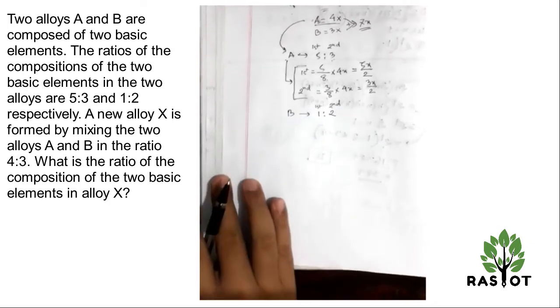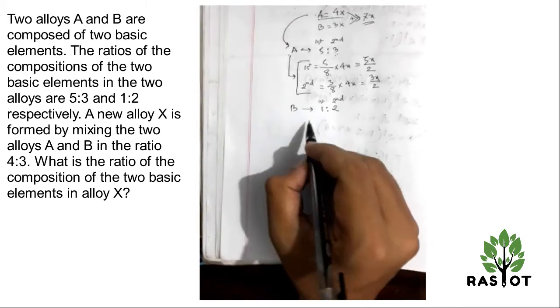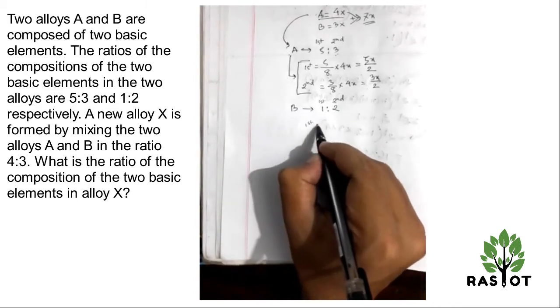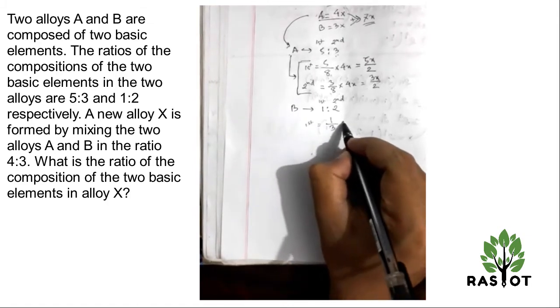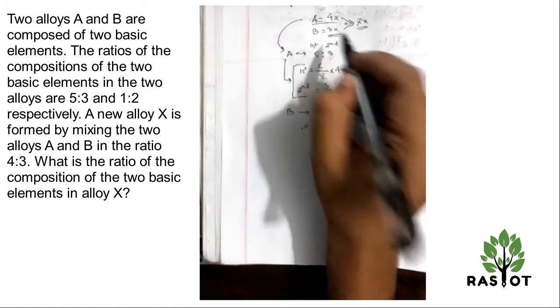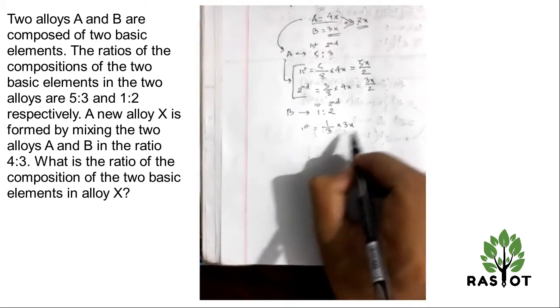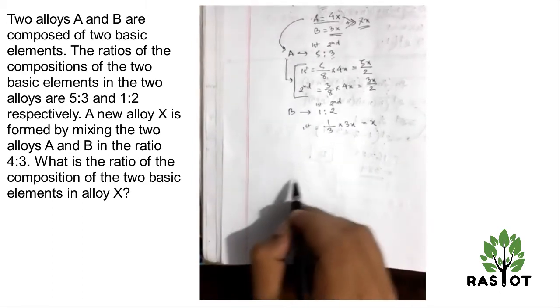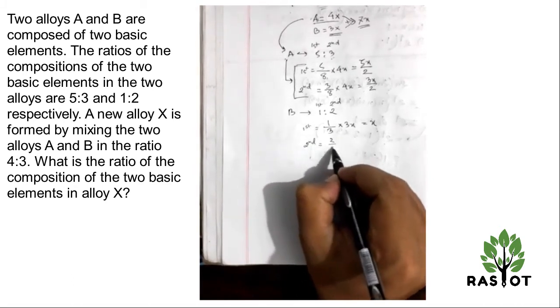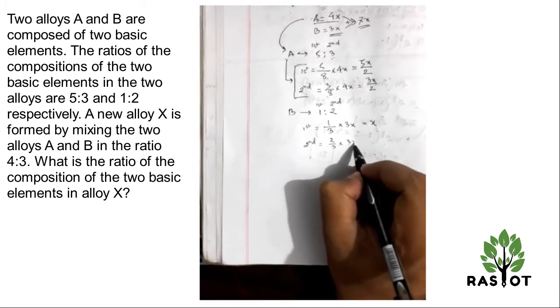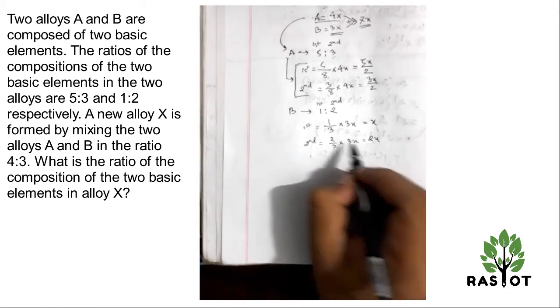For B's portion, the first element is 1 divided by 1 plus 2, that's one third. One third of 3X will give me X. The second element, 2 by 3, two thirds of 3X will be 2X.